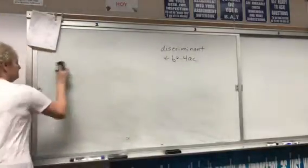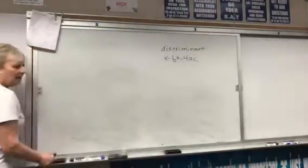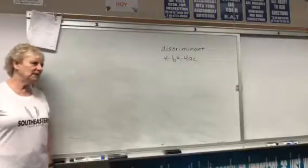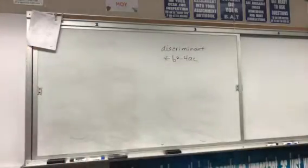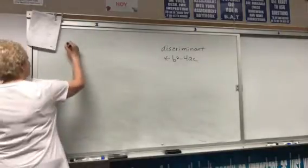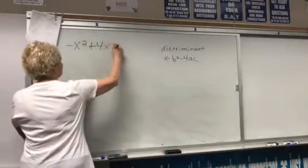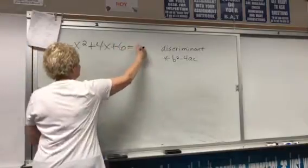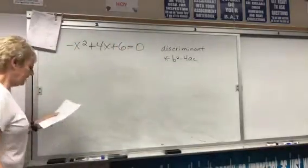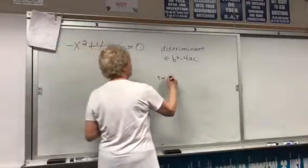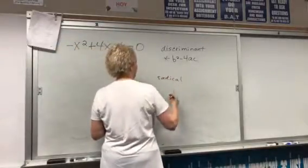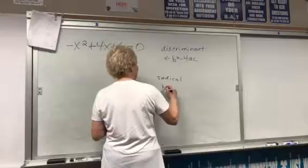All right. I'm going to give you one. And I want you to use the quadratic formula and see what you get. Miss Rising gave me a very ugly problem. Yeah. All right. I want you to give it to me in radical form and in hundredths.